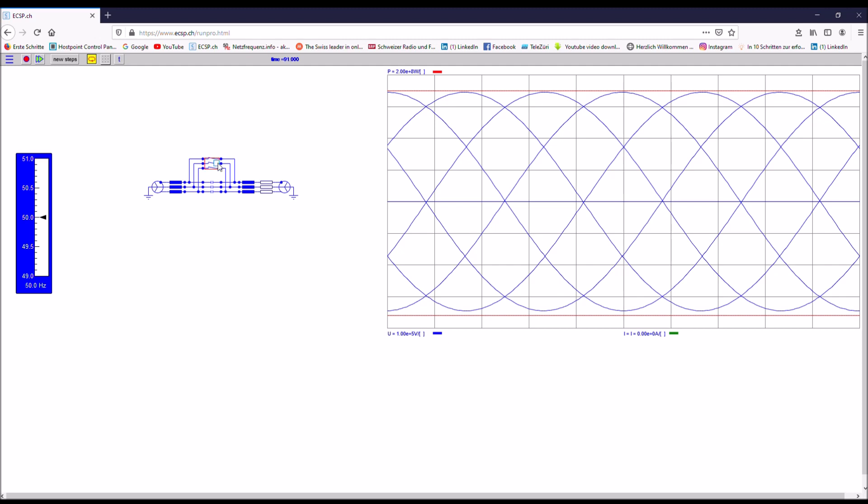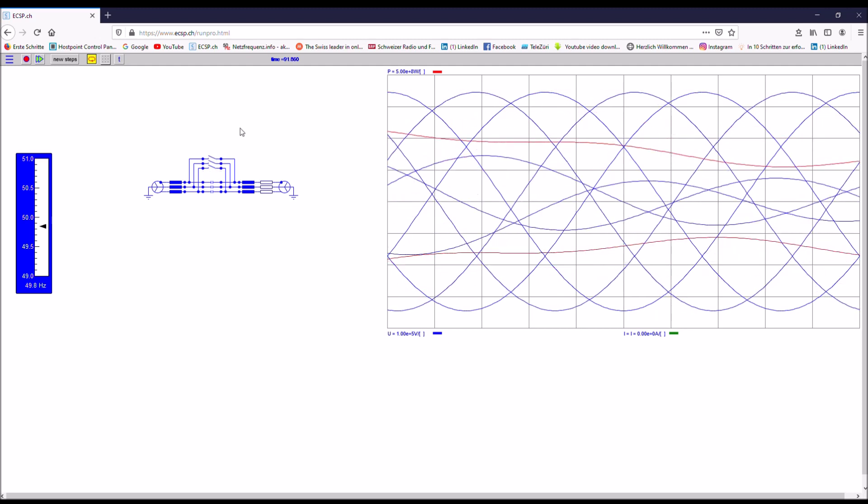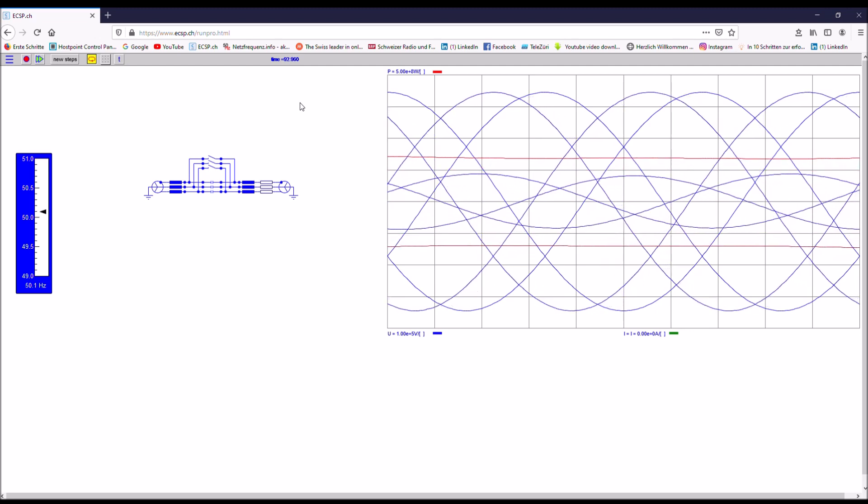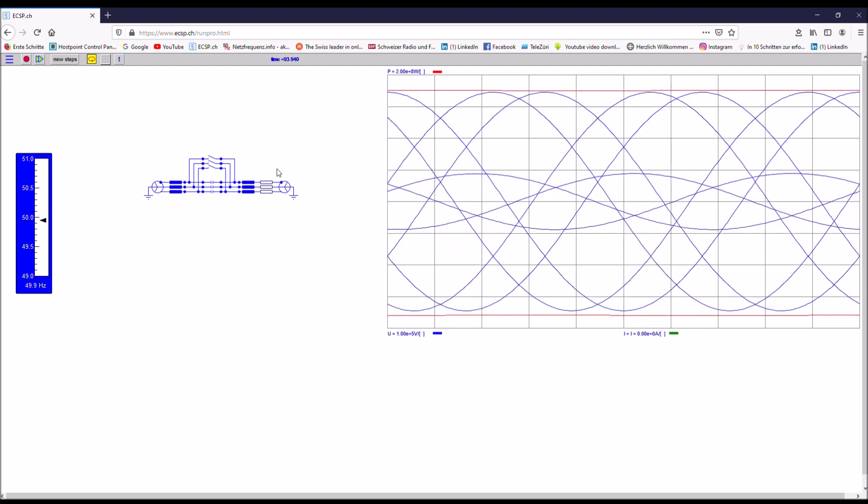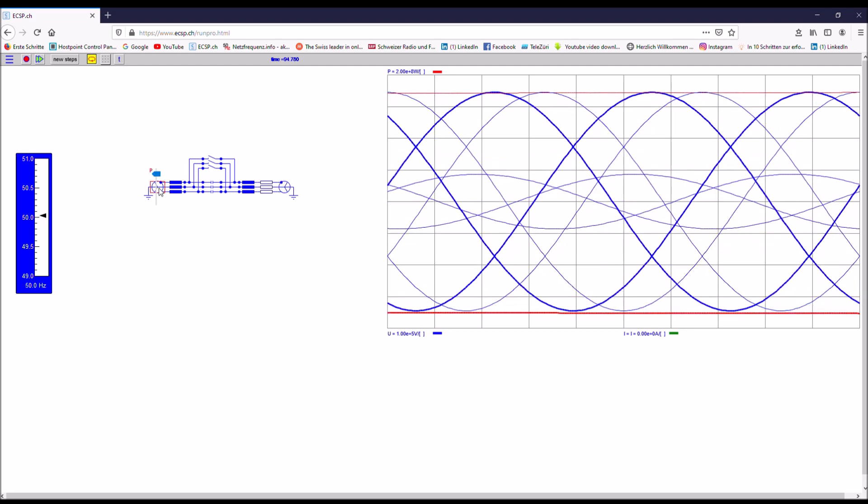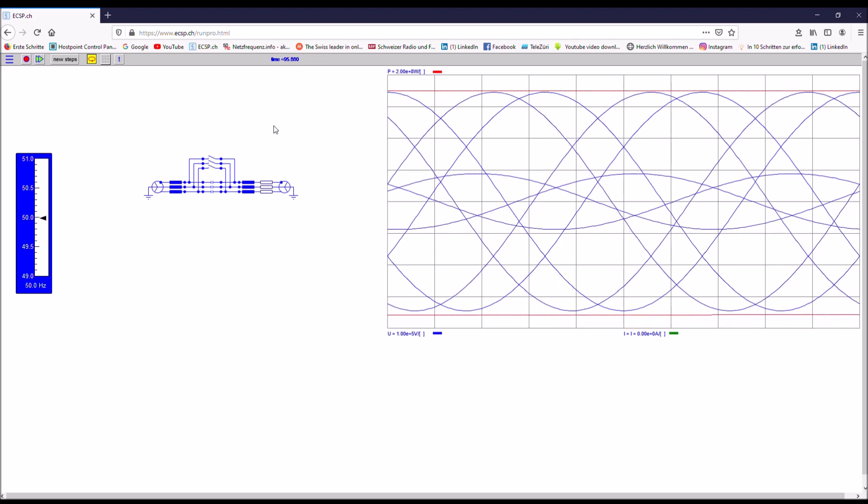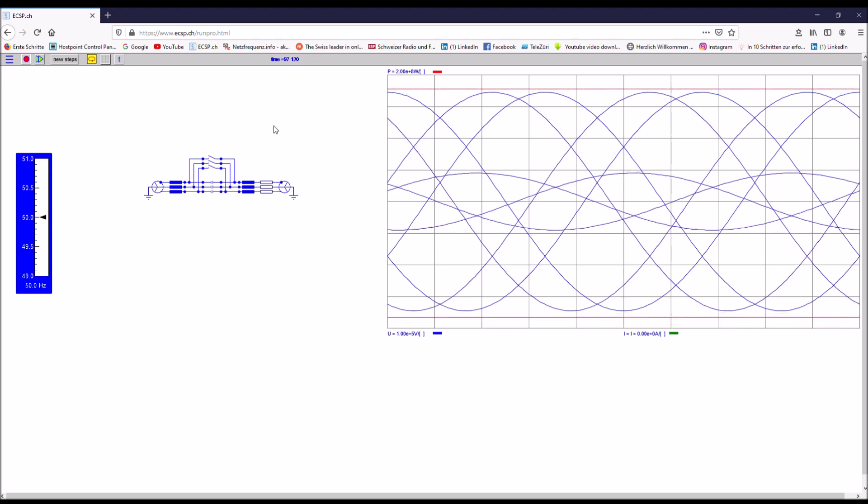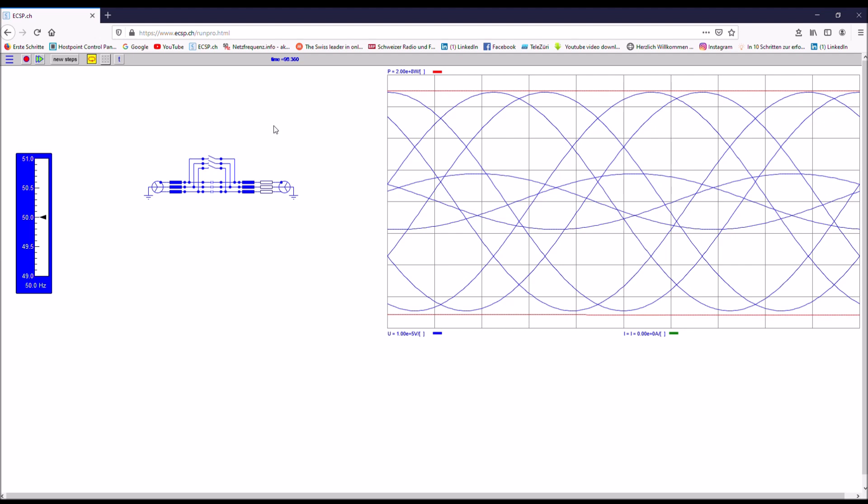And now I switch in the capacitor. So I open the breaker, and what you can see now is how much this angle between the sending end and the receiving end has been decreased. This is how you basically decrease the apparent length of a line by introducing a series capacitor.